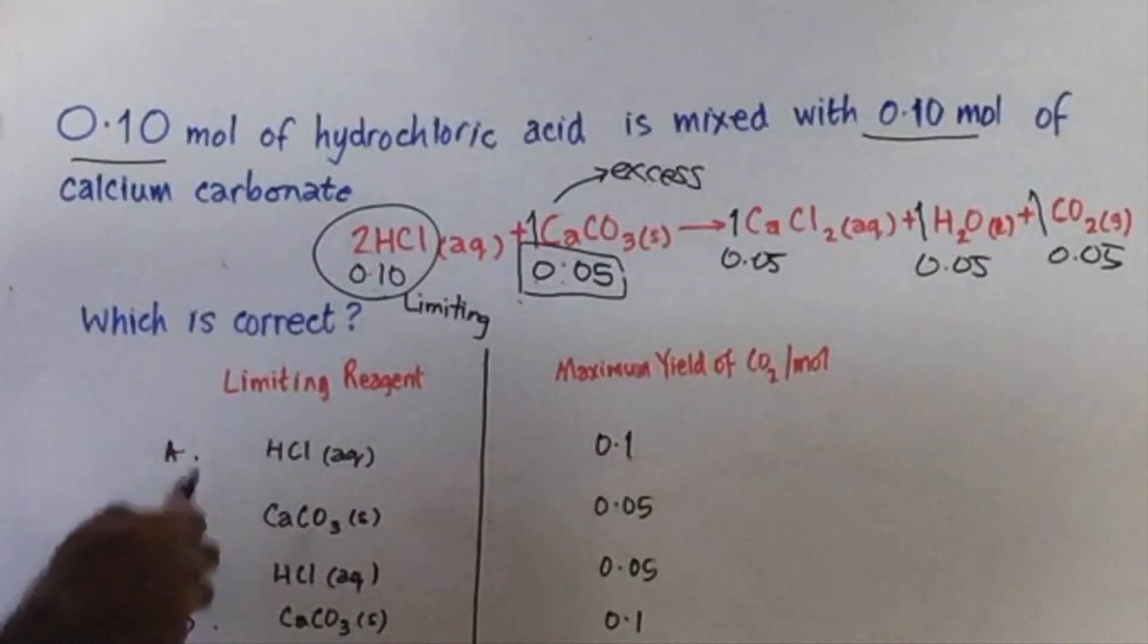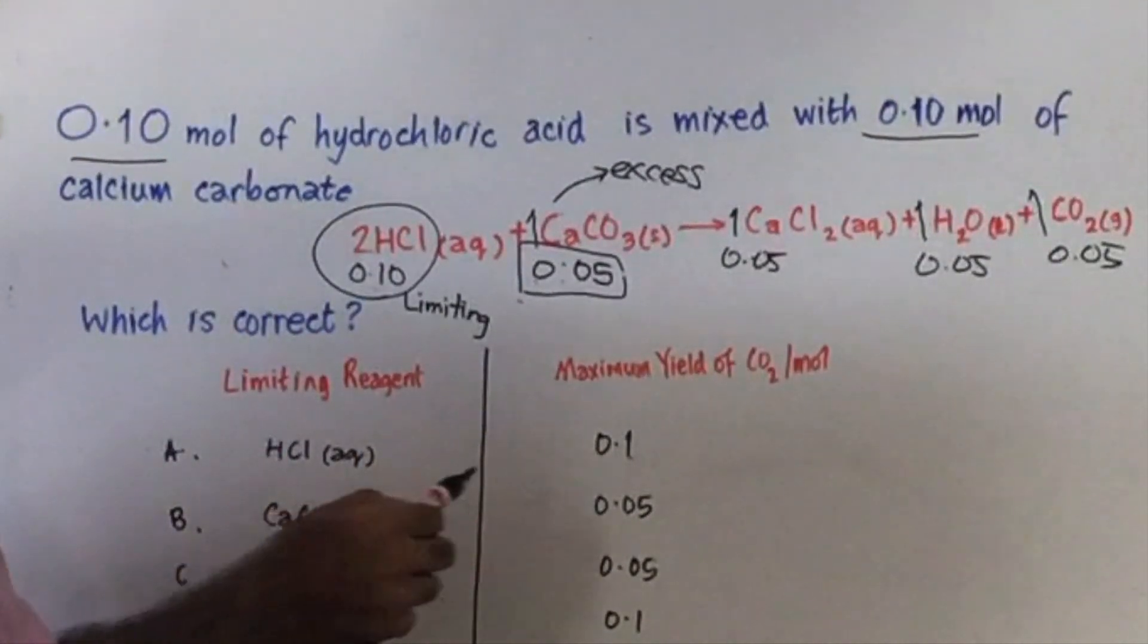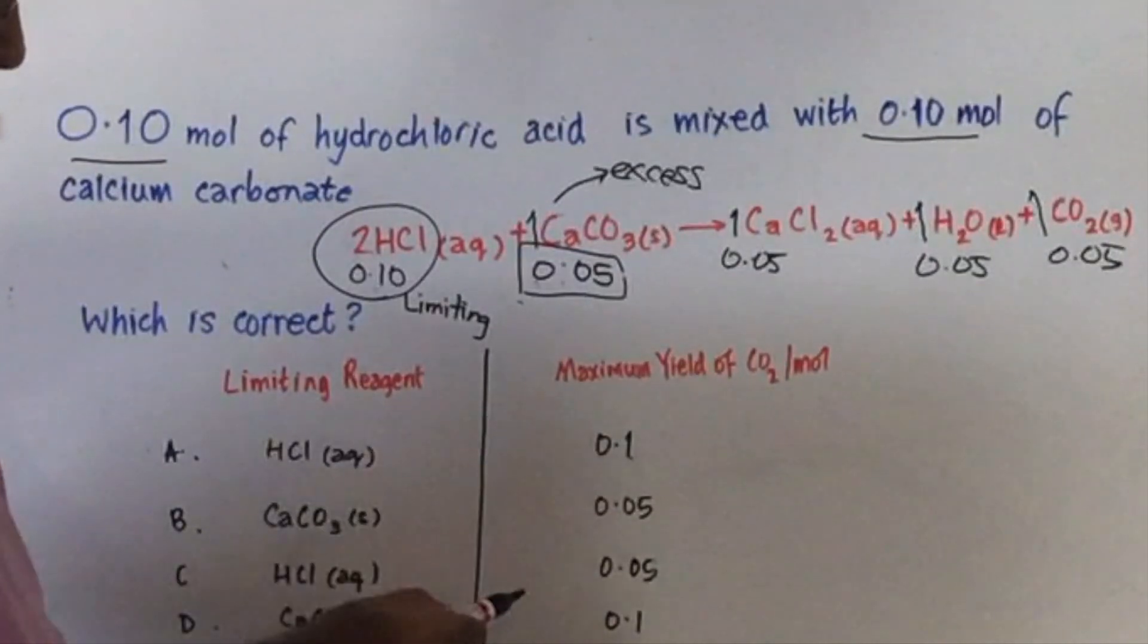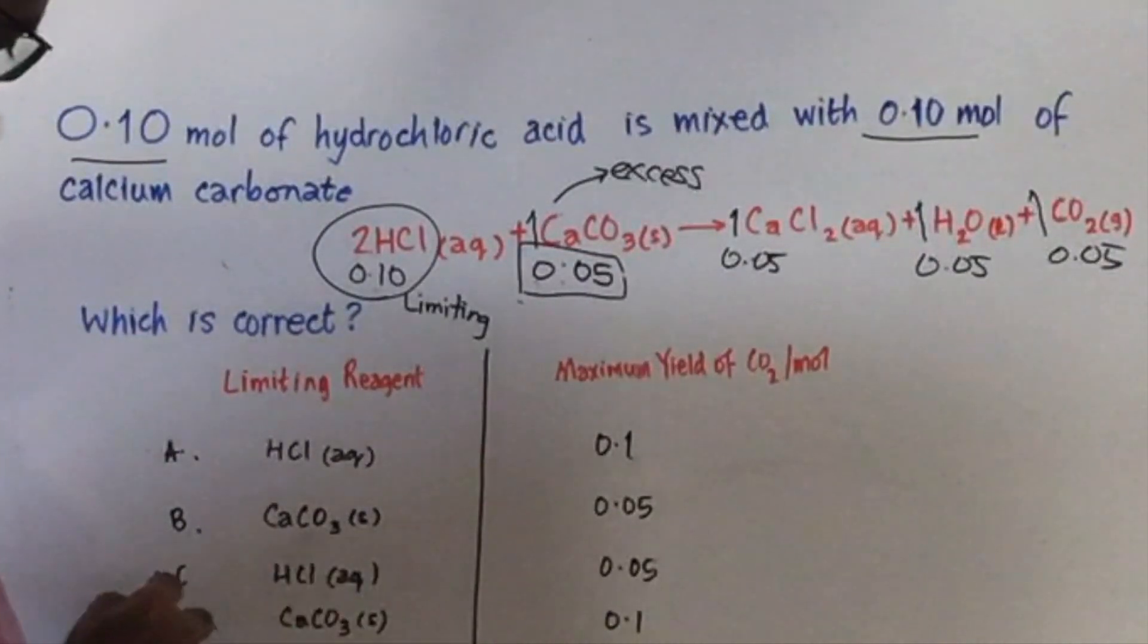So the answer for this question is that HCl is limiting, and the maximum yield of carbon dioxide is 0.05. Answer to the question, C.